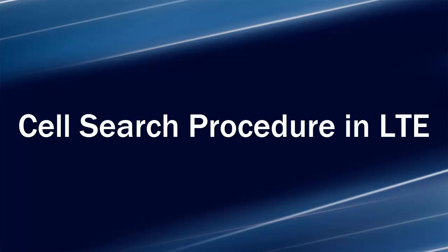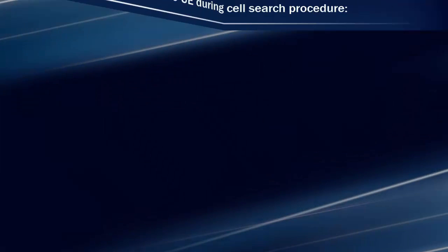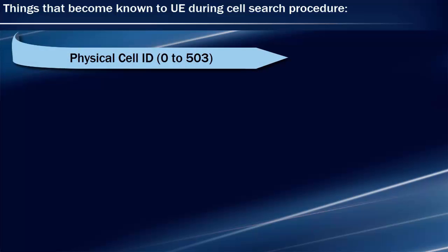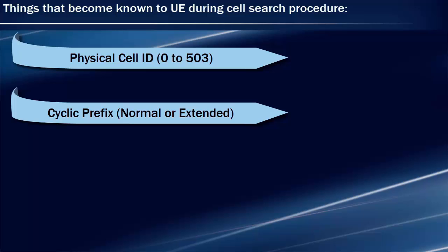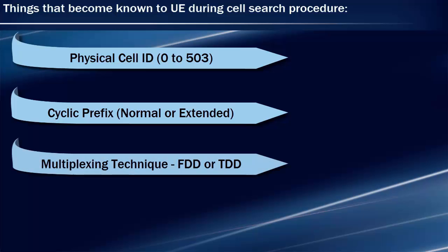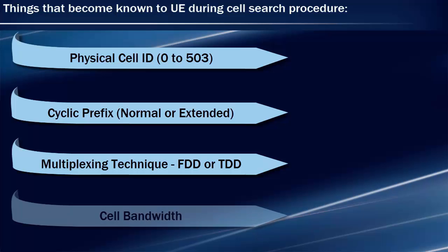The parameters covered are: Physical Cell ID — in LTE, physical cell ID uniquely identifies a cell. Second is cyclic prefix — there could be normal or extended cyclic prefix configured in the cell, and UE has to detect the type of cyclic prefix used so that it can send data to the network. Third is the multiplexing technique used — FDD or TDD — as many physical layer parameters are dependent on the multiplexing technique, so it is very crucial for UE to know it.